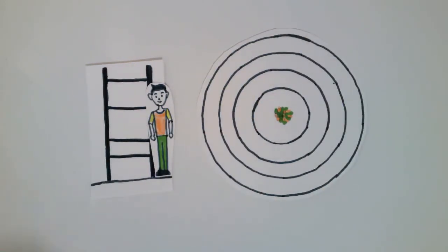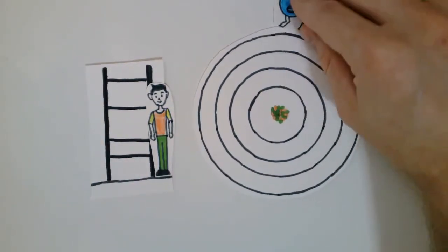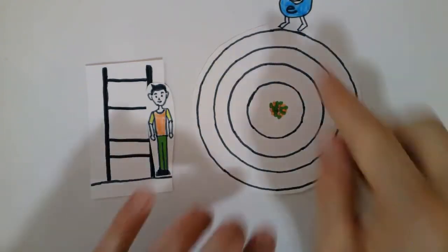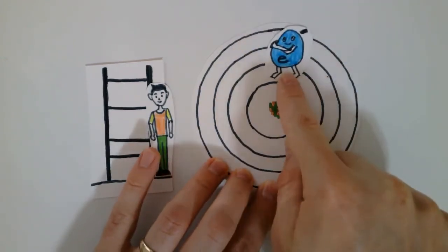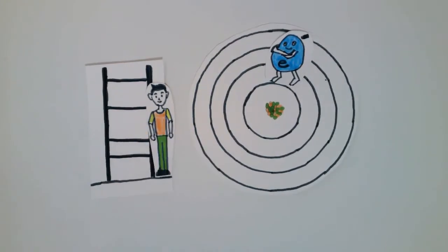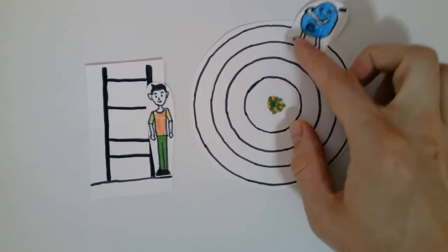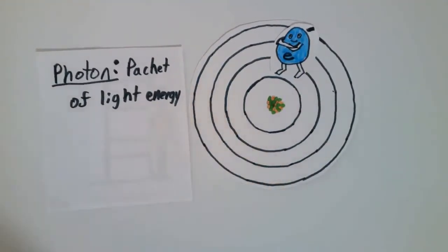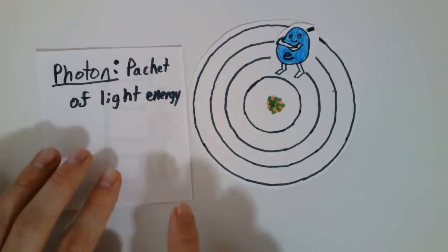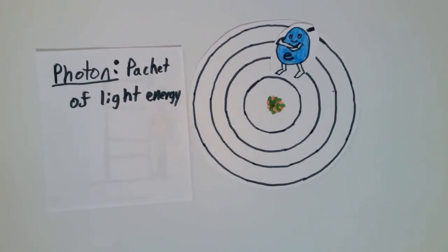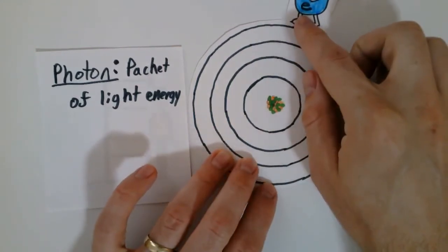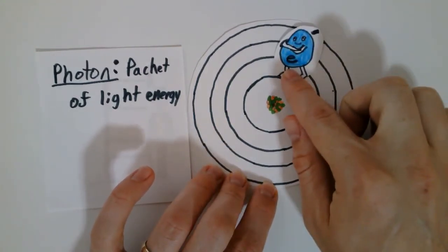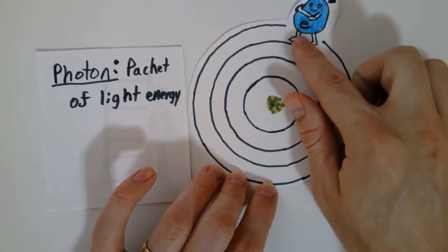The same thing happens with electrons. When they fall, the greater the height they fall from, the more energy they contain and therefore the more energy they release. When electrons fall and release energy, that energy goes into a packet we call a photon — simply a packet of light energy. The greater distance an electron falls, the more energy it releases; shorter distance, less energy.